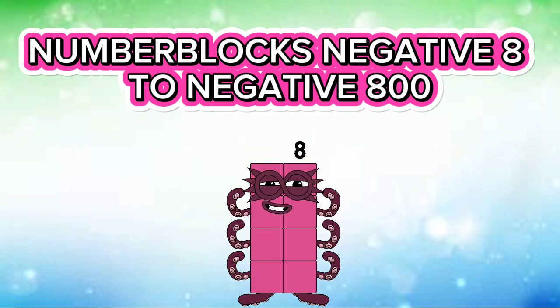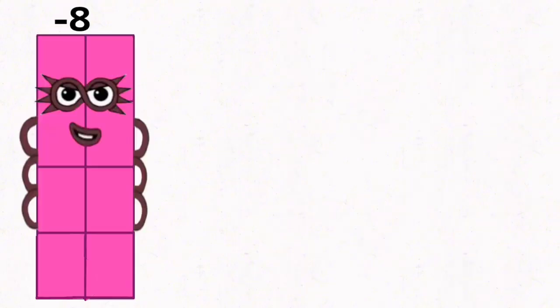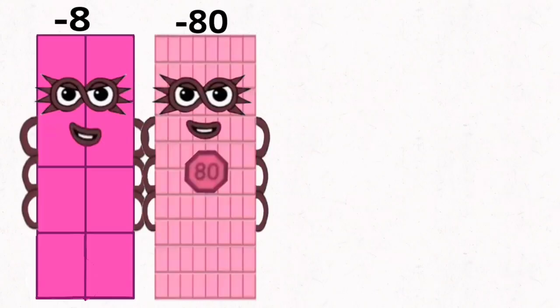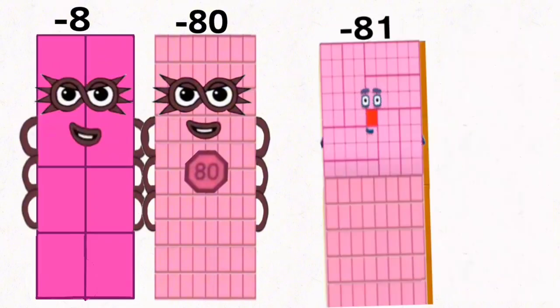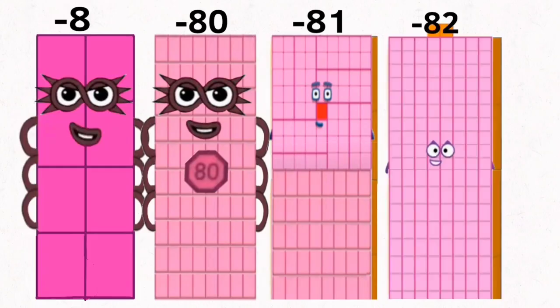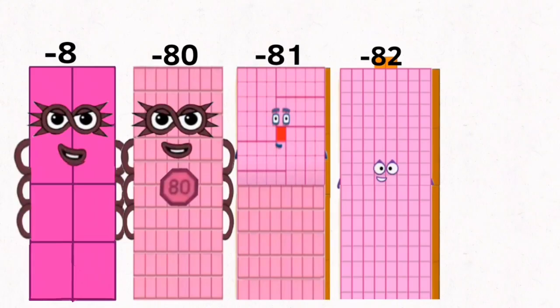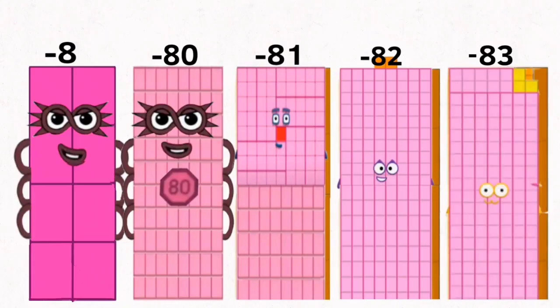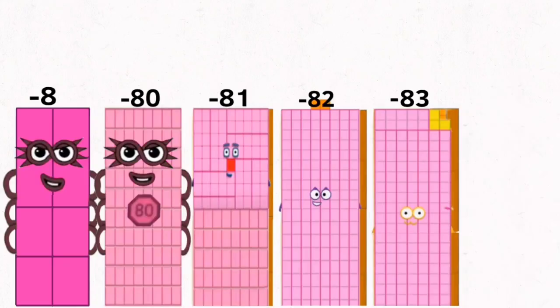Number blocks negative 8 to negative 800. Negative 8. Negative 80. Negative 81. Negative 82. Negative 83. Negative 84.